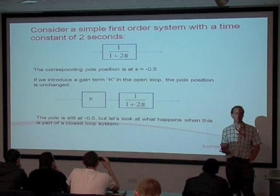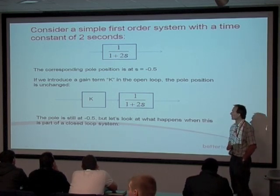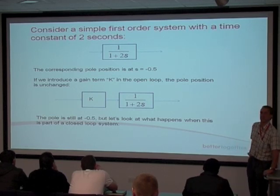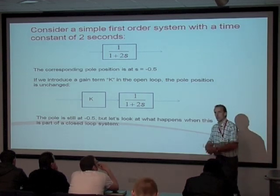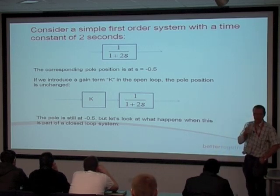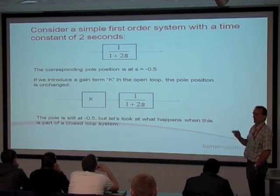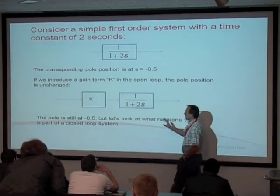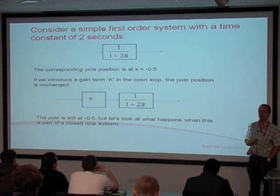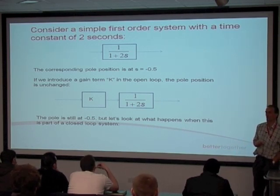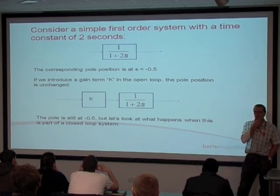Let's start nice and easy. Simple first-order system: the corresponding pole position would be at S equals minus 0.5 — that's the value of S that makes the denominator equal to zero. Now, I'm only going to introduce one particular sort of variable — a variable gain — but we can use the technique for more complex things. If I introduce a variable gain into that open-loop system, the pole is still at S equals minus 0.5. So that's not very helpful so far.